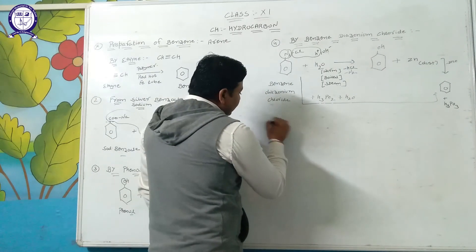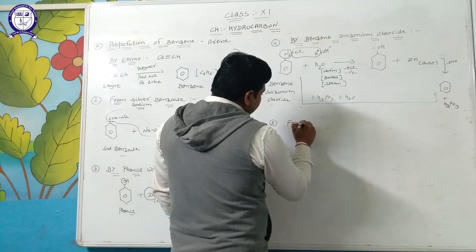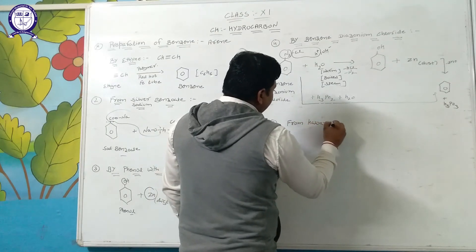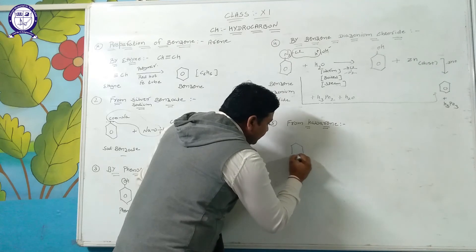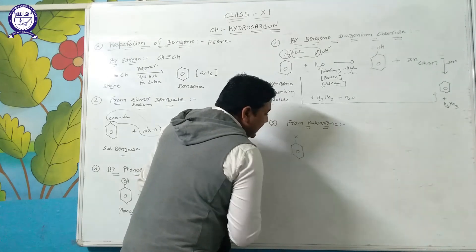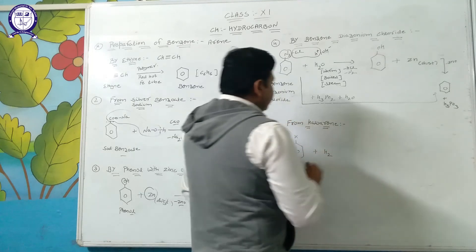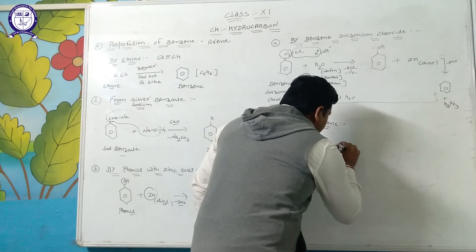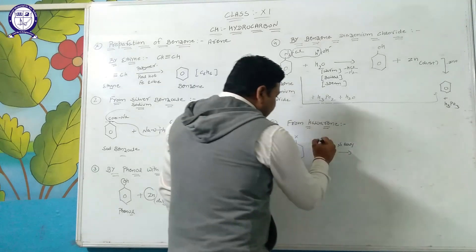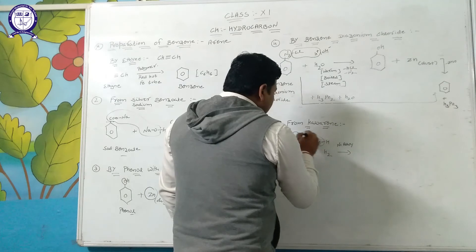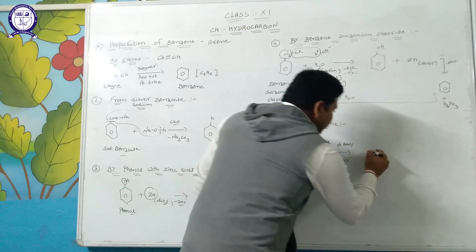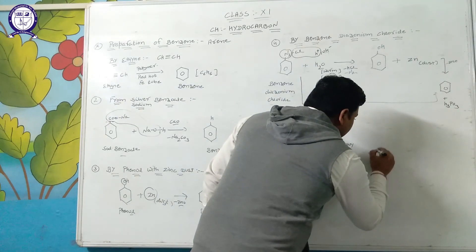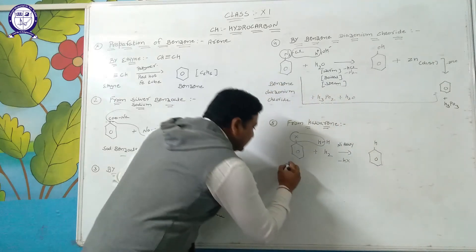Fifth method: from haloarene. Haloarene (C6H5-X) reacts with dihydrogen (H2) in the presence of a nickel alloy catalyst. X combines with H and releases HX; the remaining hydrogen attacks the carbon to give the formation of benzene.